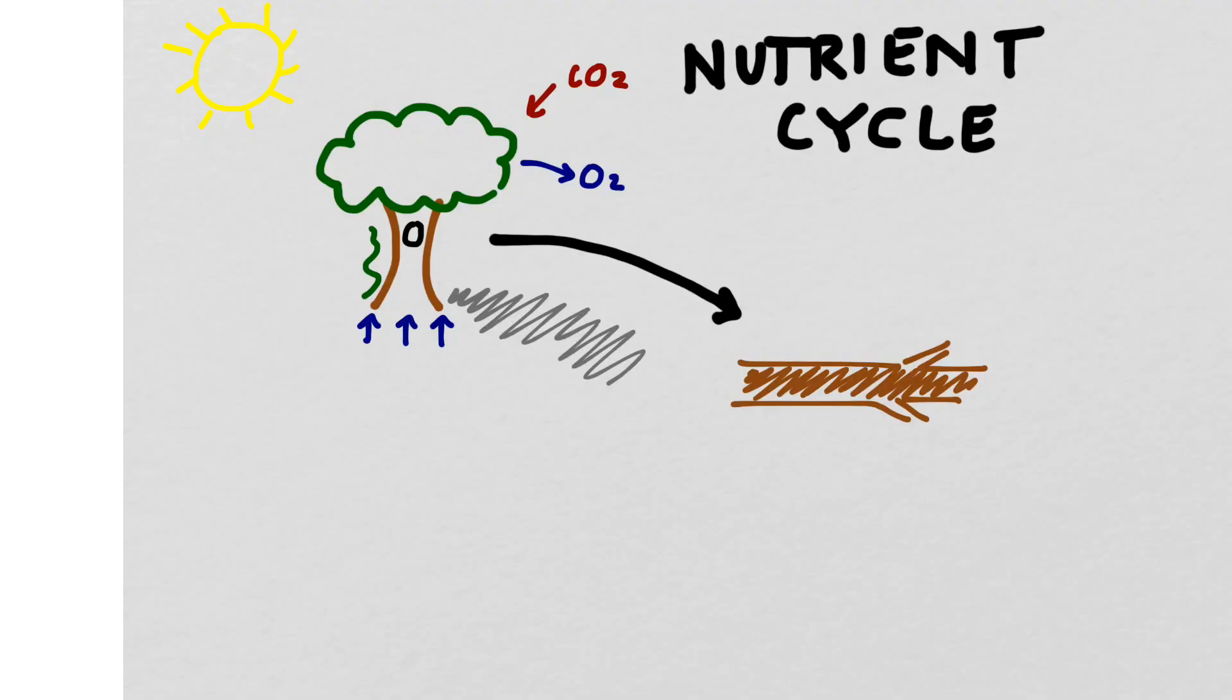No matter how healthy the tree is, ultimately it's going to either die or fall over in some kind of storm and wind up on the forest floor. Because this tree used to be alive and is composed of organic matter, it's full of tons and tons of nutrients which are now trapped inside the dead tree.